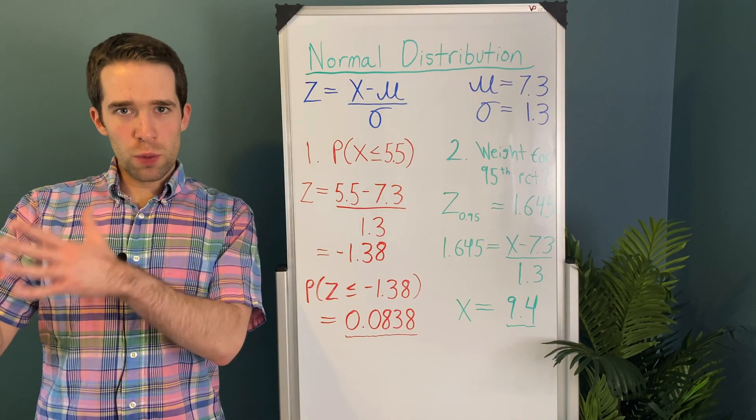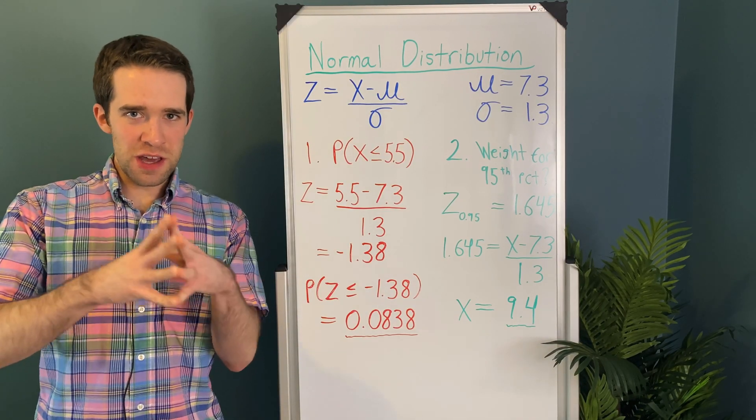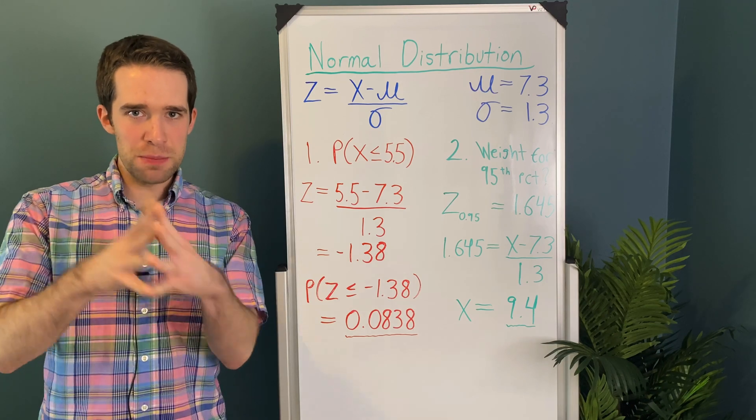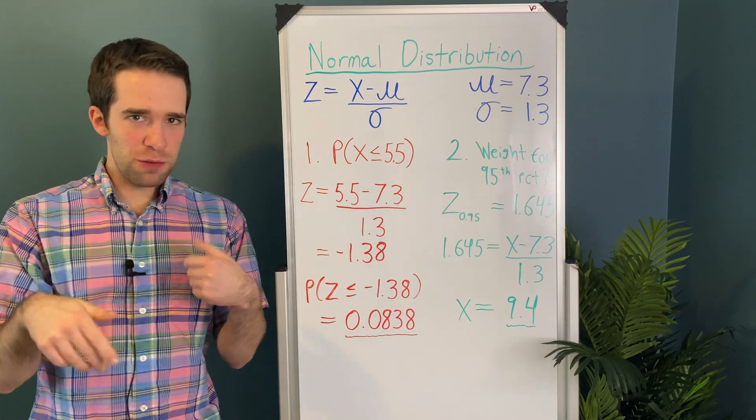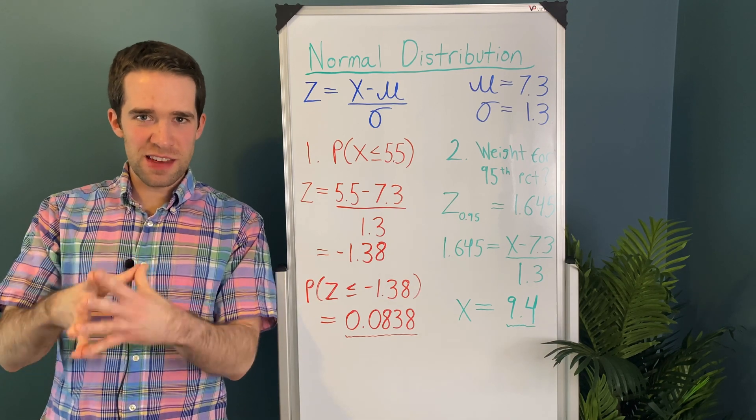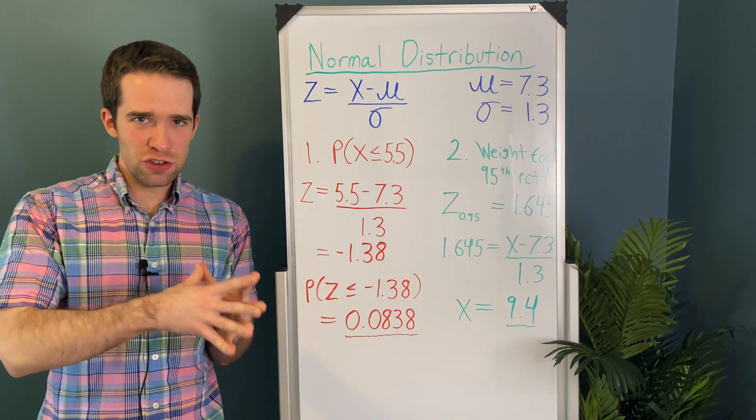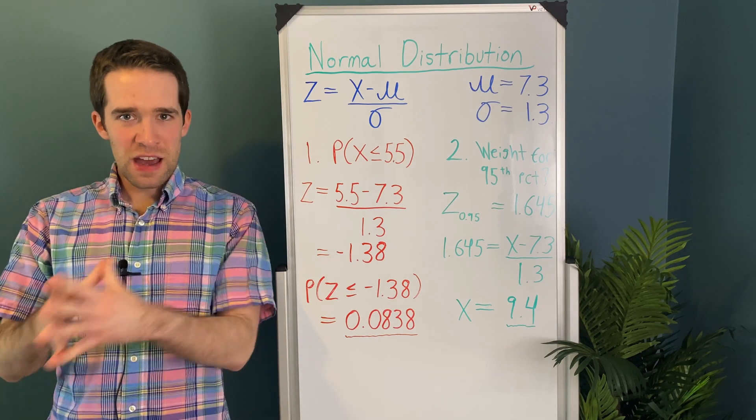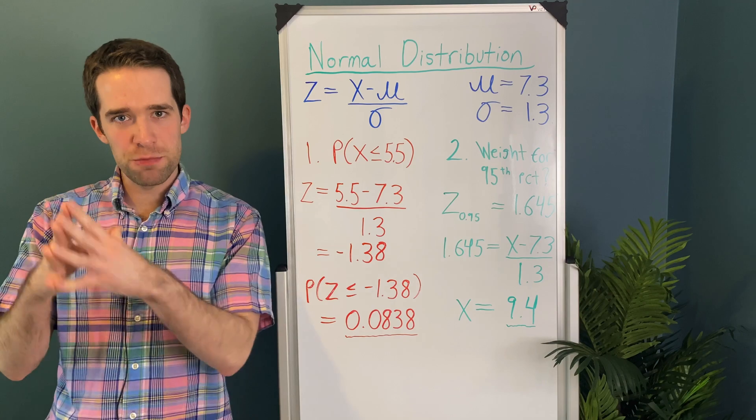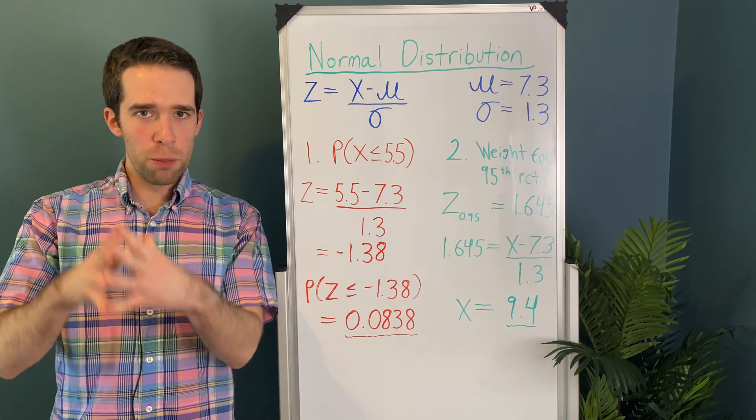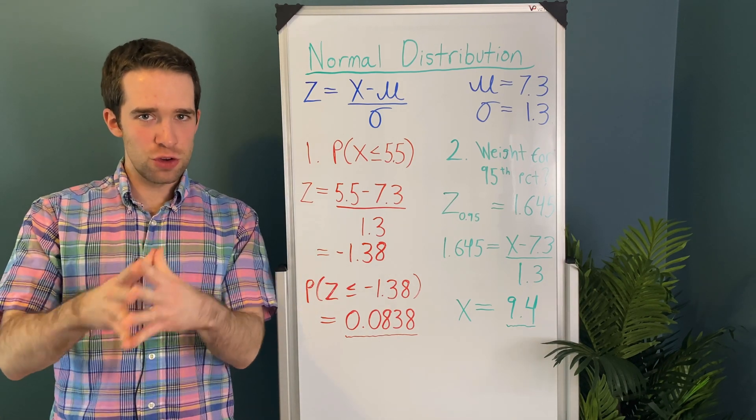All right, let's look at a real world example. So there's a study out there which tells us that baby birth weight is normally distributed, that the mean of all such baby birth weights is 7.3 pounds and the standard deviation is 1.3 pounds. Additionally, we know that a baby born at less than 5.5 pounds is considered low birth weight.